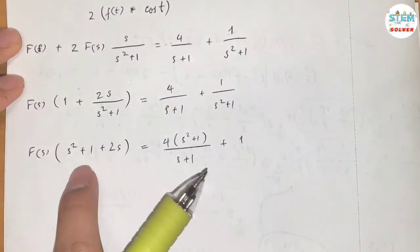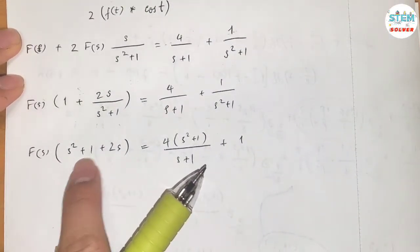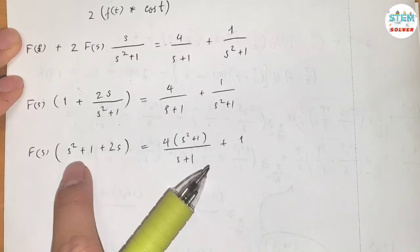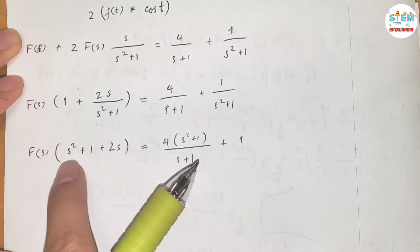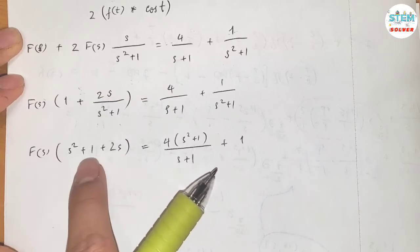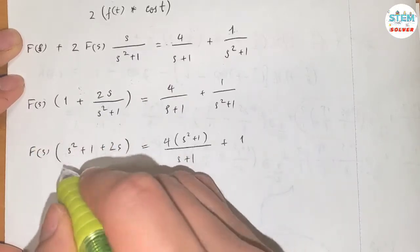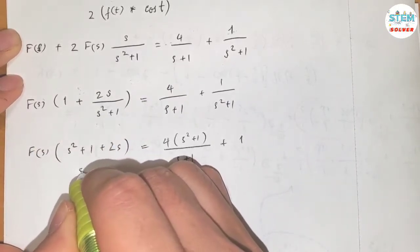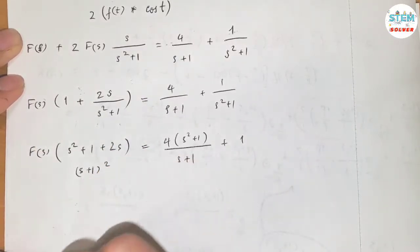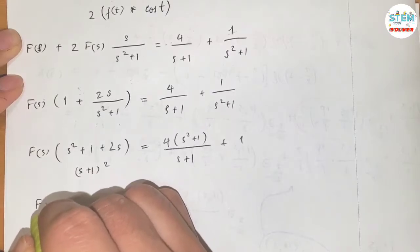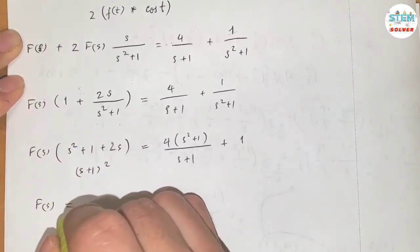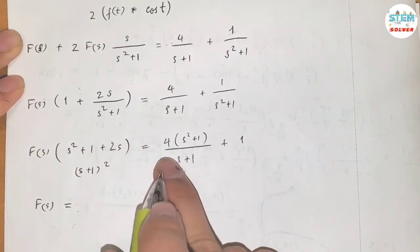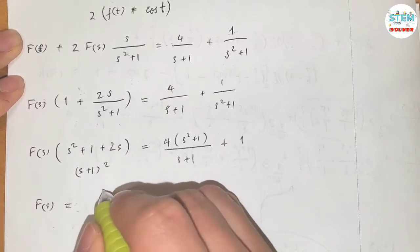If you notice, this is a polynomial — rearranging gives s² plus 2s plus 1, which factors as (s plus 1) squared. So I'm going to divide both sides by (s plus 1) squared.